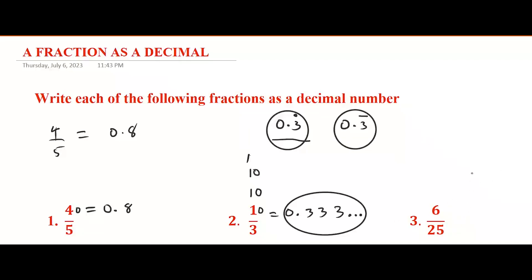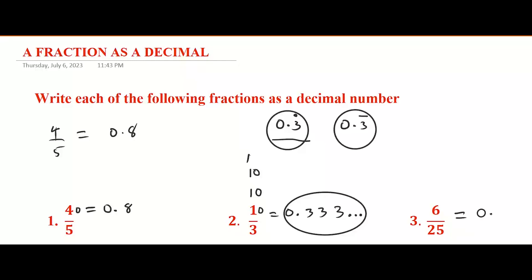For 6/25 as a decimal number, take the same steps. 25 goes into six — zero times, impossible — so put the decimal point, then add zero to six making 60. 25 goes into 60 two times because 25 times two is 50, giving remainder 10.